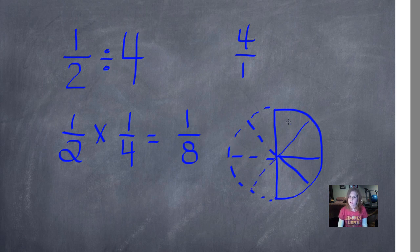So when you count them all, it's 1, 2, 3, 4, 5, 6, 7, 8. So dividing a half into 4 parts gives you actually the answer of 1 of 8 parts, or 1 eighth.